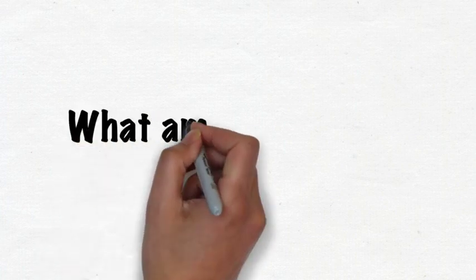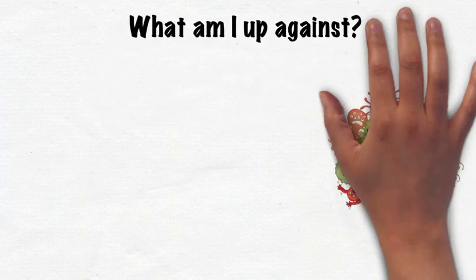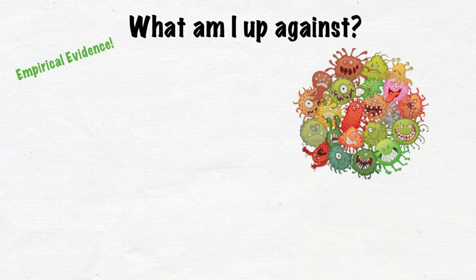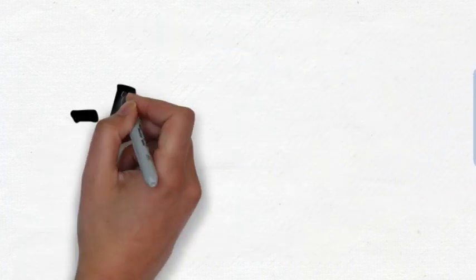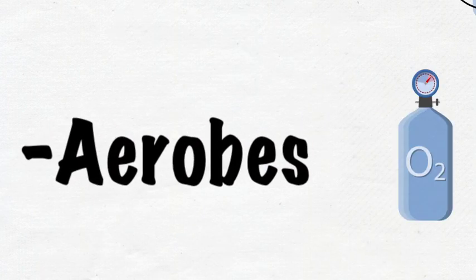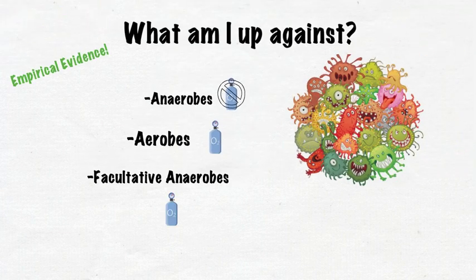Now that you have an understanding of what these infections are and why they tend to cause problems, we must address how we go about treating them. The key to using antibiotic therapy in any situation is to know what you're up against. Most antibiotics are prescribed using empirical evidence — choosing an antibiotic based on which microorganism is likely causing the infection. Microorganisms can be categorized by their oxygen requirements: anaerobes survive only where oxygen is absent; aerobes need oxygen, similar to humans; and facultative anaerobes have the unique ability to survive with or without oxygen. This information helps influence our antibiotic choice, but is simply one piece of the pie.